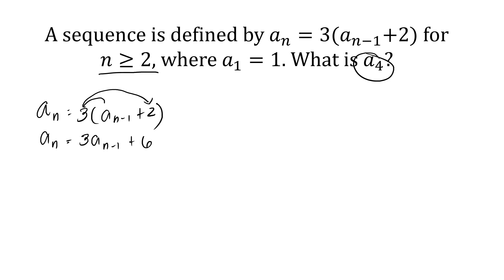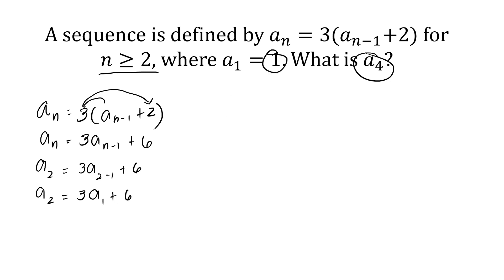We are going to substitute 2 first, since the least value of our n is 2. So a sub 2 is equal to 3 times a sub 2 minus 1 plus 6. A sub 2 minus 1 is a sub 1. We already know that the value of a sub 1 is 1, so a sub 2 is equal to 3 times 1 plus 6, which gives us 3 plus 6. A sub 2 is equal to 9.